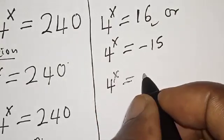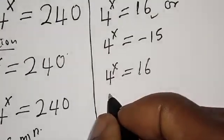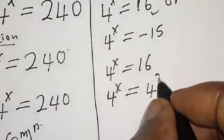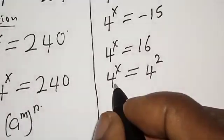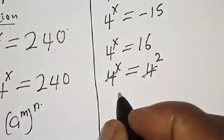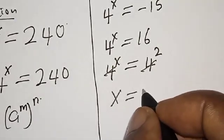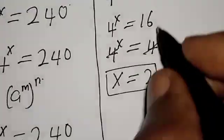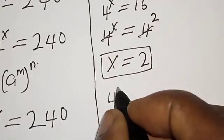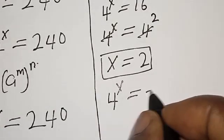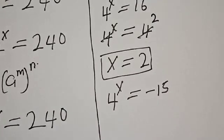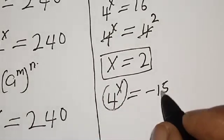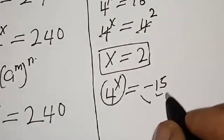From 4 raised to power s is equal to 16, we have 4 raised to power s is equal to 4 squared. They have the same base, so the bases cancel. Therefore s is equal to 2. That is the value of s. For the second case, we have 4 raised to power s equals minus 15. Remember, this type of exponential equation cannot take a negative value, so we reject this.